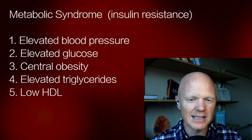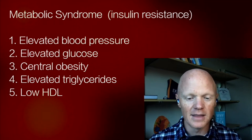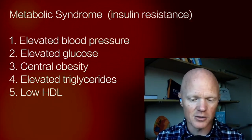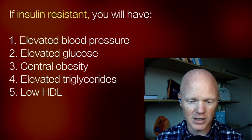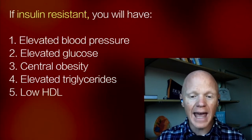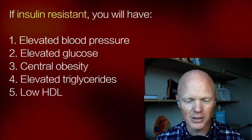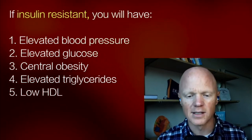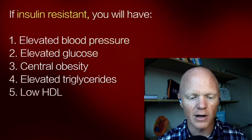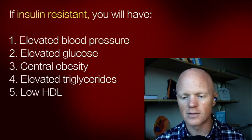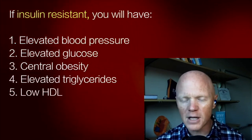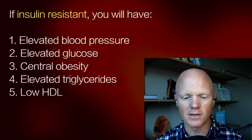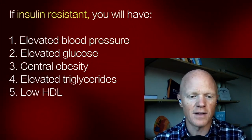When we look at it as insulin resistance syndrome, now we understand the origins of these problems. If someone is insulin resistant, they will have elevated triglycerides and lower HDL. They will have higher glucose and higher blood pressure. The central obesity can both be cause and consequence of insulin resistance itself. Altogether, those disorders are more accurately described as consequences of insulin resistance.